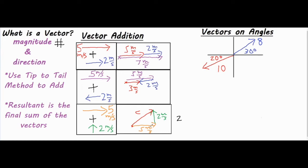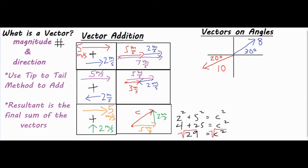So you take a² — one of the sides — plus b² and set that equal to c². Two squared is four, five squared is twenty-five, so c² equals twenty-nine. You finish by taking the square root of both sides to get c, which is the square root of twenty-nine.